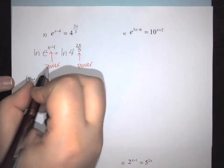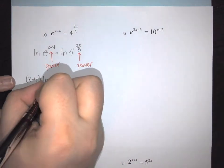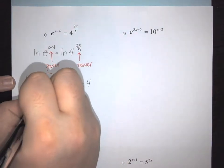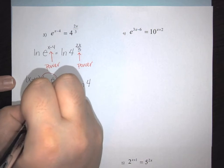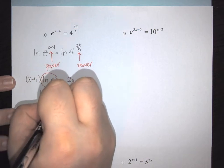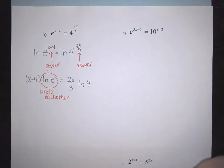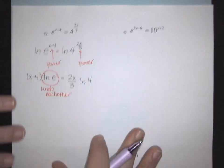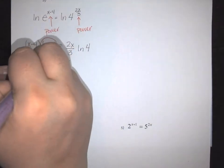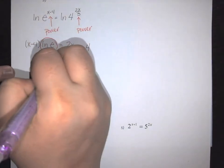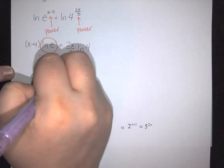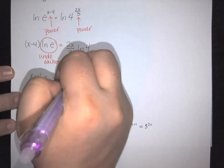The natural log of e cancels out, so we can simplify: x minus 4 equals (2x over 3) times natural log of 4.